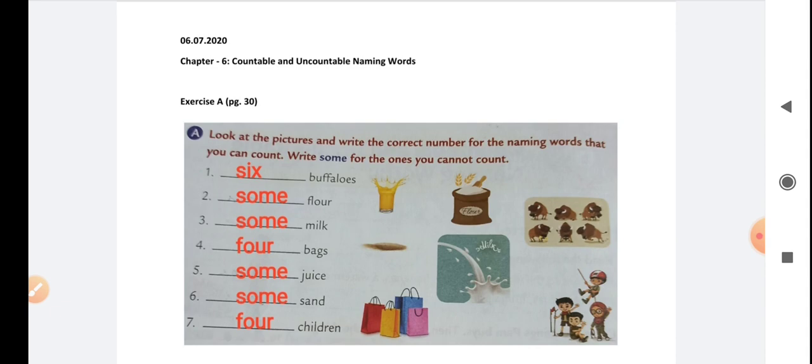So let's read this instruction given on page number 30 for Exercise A before we start writing this in our book and copy. Look at the pictures and write the correct number for the naming words that you can count. Write 'some' for the ones you cannot count.